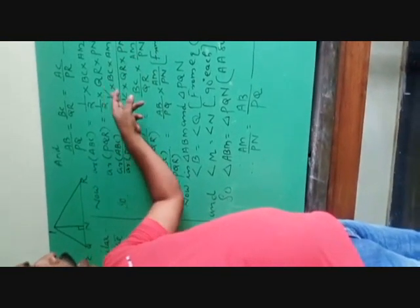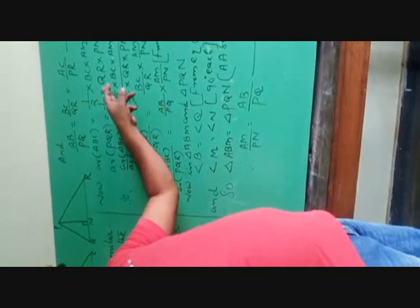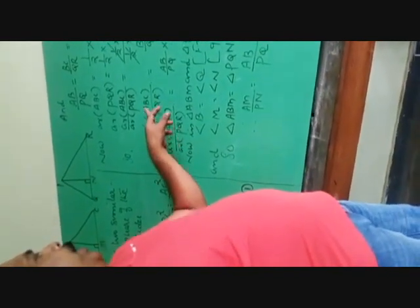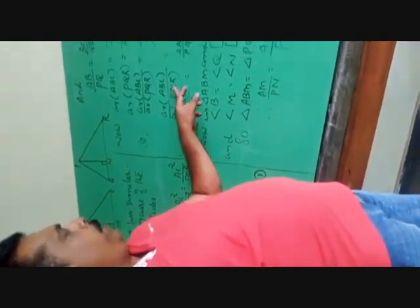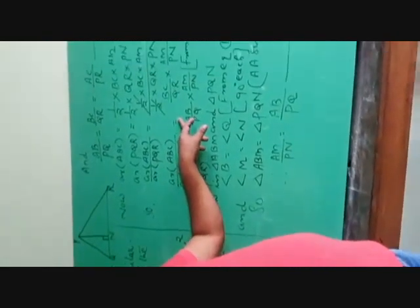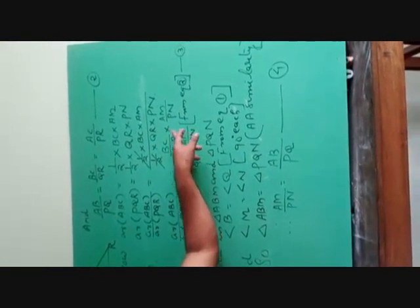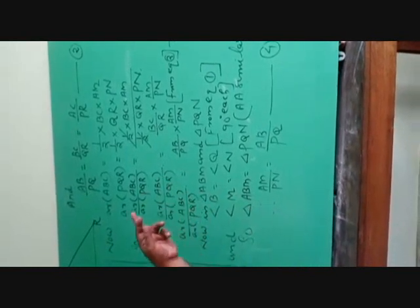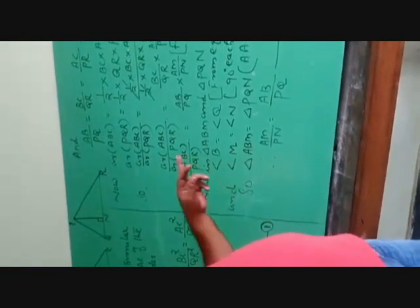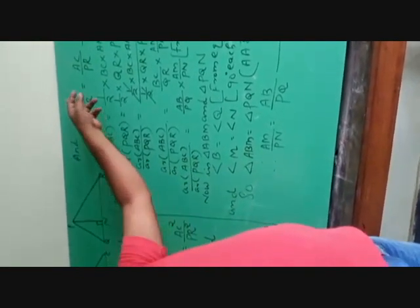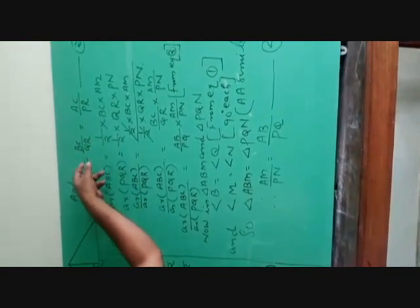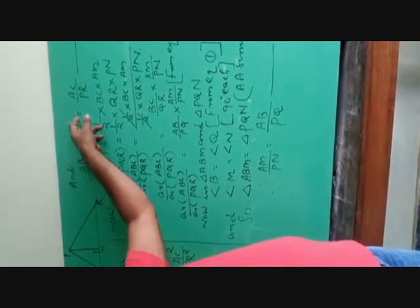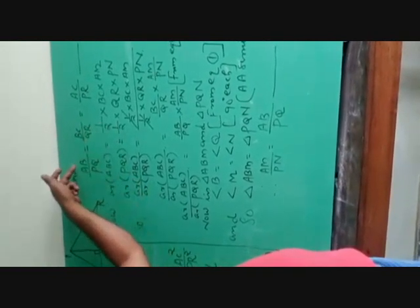After that, we divide these two: area of triangle ABC divided by area of triangle PQR equals half into BC into AM, divided by half into QR into PM. The halves cancel, giving area of triangle ABC divided by area of triangle PQR equals BC by QR into AM by PM. From equation number 2, BC by QR equals AB by PQ.